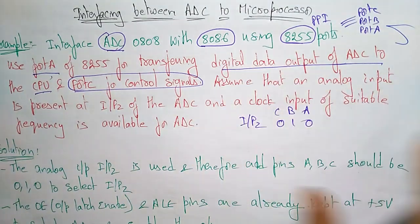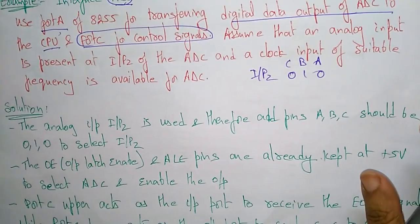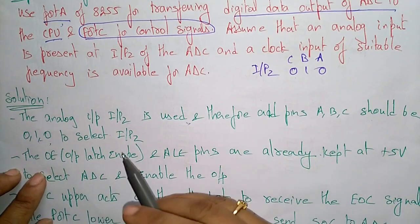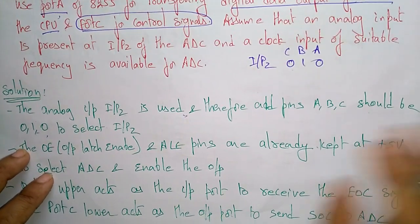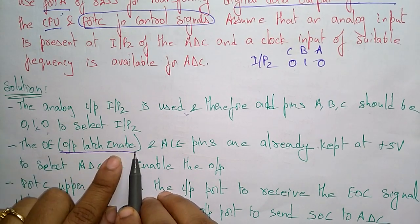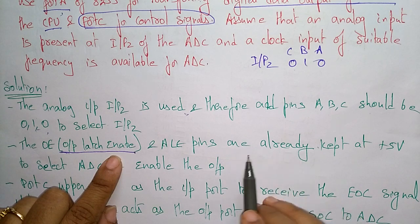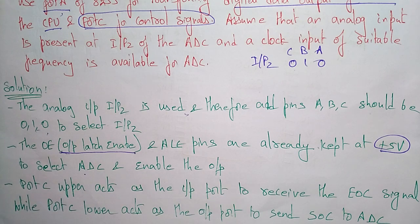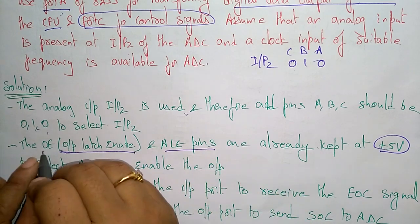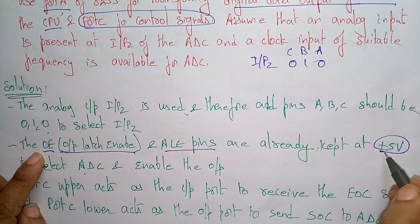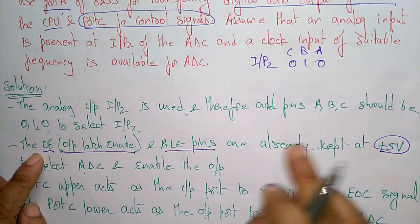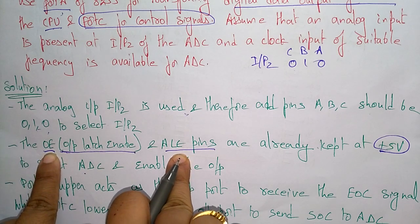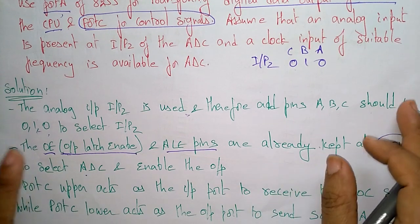The analog input at IP2 is used, so the address pins will be 0 1 0. When converting analog to digital, the output latch enable (OE) and address latch enable (ALE) pins are kept at plus 5 volts to select the ADC and enable the output. When these pins are at plus 5 volts, the system is ready to convert. At the time of conversion, these two pins must be active and ready.